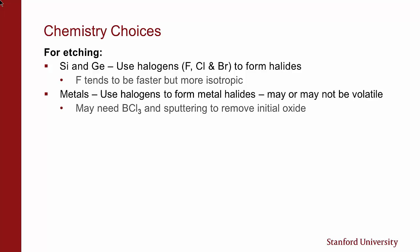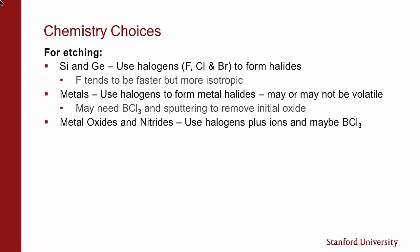For metals, we use halogens also to form metal halides, which may or may not be volatile. We may need boron trichloride (BCl3) and sputtering to remove an initial oxide. BCl3 is a very interesting chemical in that it not only removes oxides, but when it's in the gas chemistry, it removes any water vapor or oxygen that may be coming from the surfaces, generating an environment void of any oxidizers.